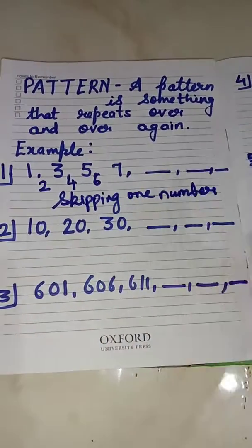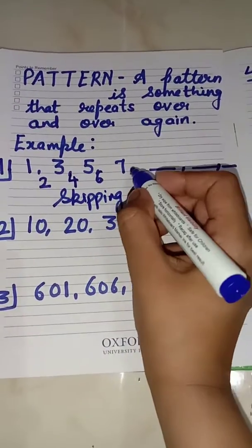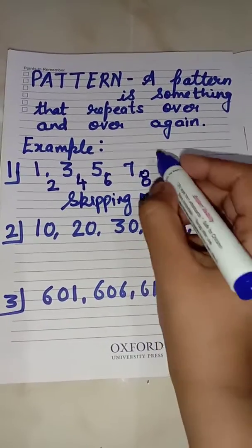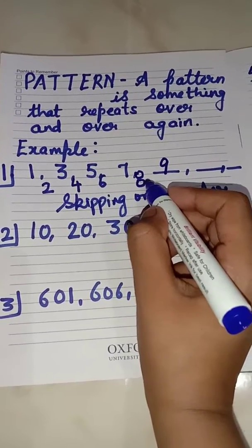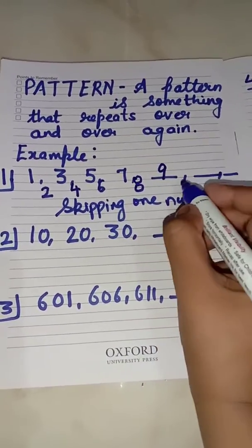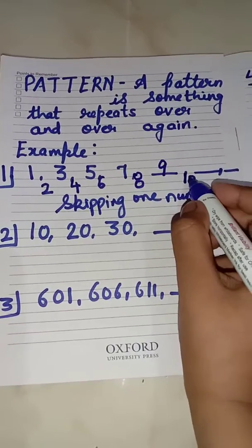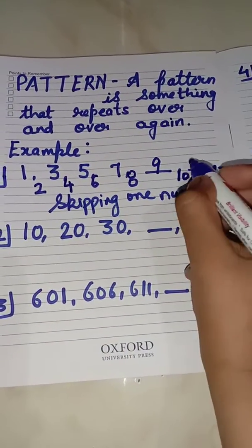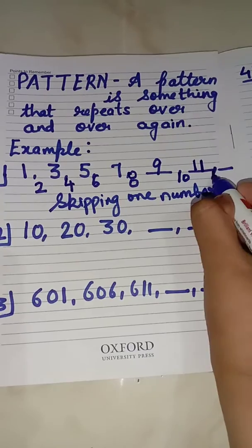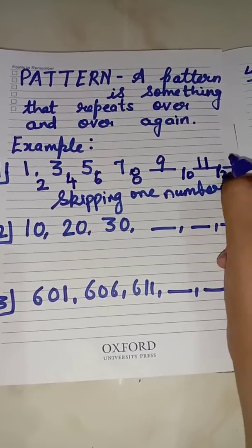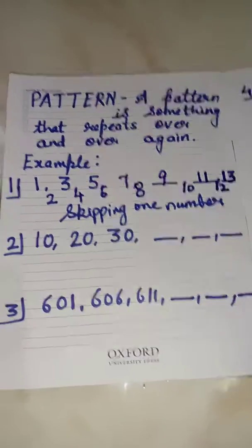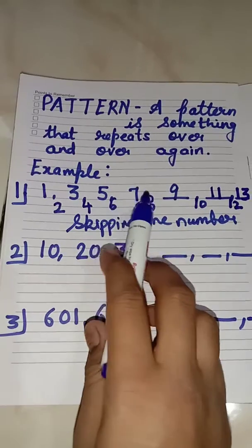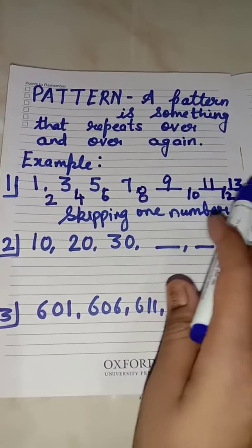So what will come after 7? After 7 comes 8, but we will not write 8. What comes after 8? 9. So again we have skipped one number and we have written 9. Then what comes after 9? 10. But we will not write 10 because we are skipping one number. So we will write 11. Then 12 — but we will not write 12. What comes after 12? 13. So here we have one pattern — skipping one number: 1, 3, 5, 7, 9, 11, and 13.